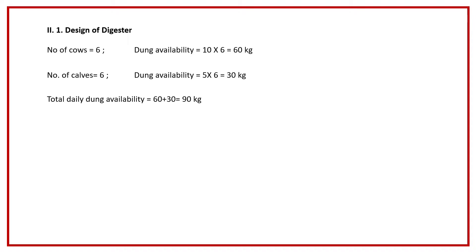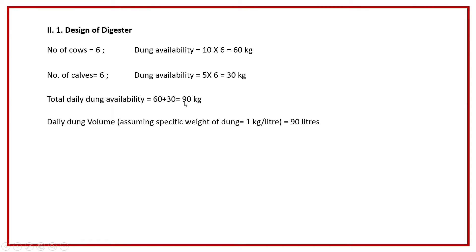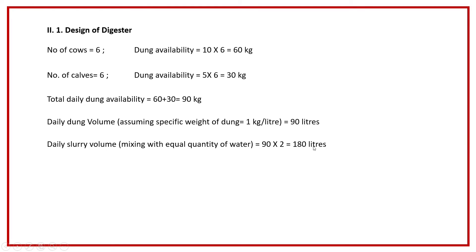Our required total solid content value is 8 to 10 percent, which is roughly half of 18 to 20 percent. So to make the total solid content 8 to 10 percent, we add an equal amount of water. We consider the specific weight of the dung as 1 kg per liter, so we can write 90 kg as 90 liters. The daily slurry volume is cow dung plus water, which is 90 into 2, that is 180 liters.